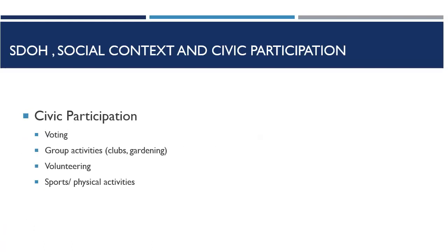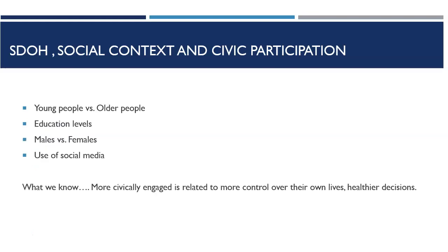The first element is civic participation. Examples of how it can be measured include: do you vote? Are you involved in group activities? Do you volunteer? Are you engaged in sports and physical activities? These are all examples of civic participation — activities that engage with the community and often make it a better place. We know that the more civically engaged people are, the more control they feel over their lives and the healthier decisions they make, so more civically engaged people tend to be healthier.